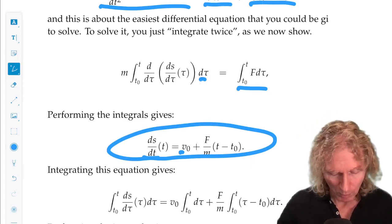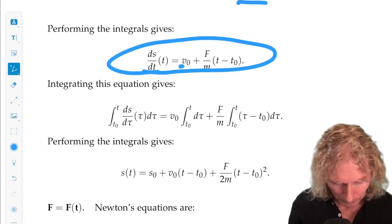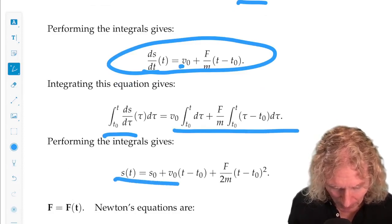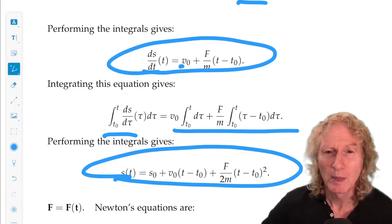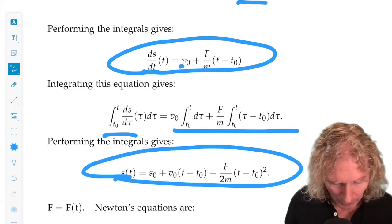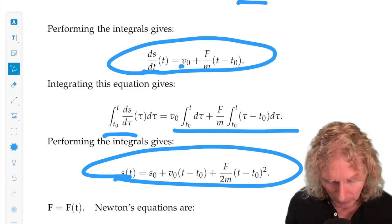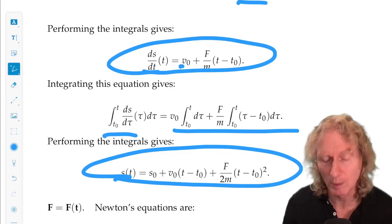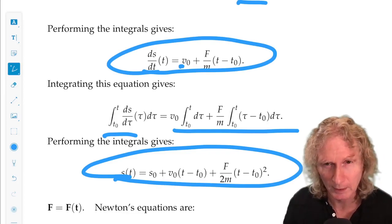We integrate one more time. And we get this expression that maybe you've seen in some context before. So, the position is the initial position s0 plus the initial velocity times t minus t0 plus this term that's quadratic in t minus t0.